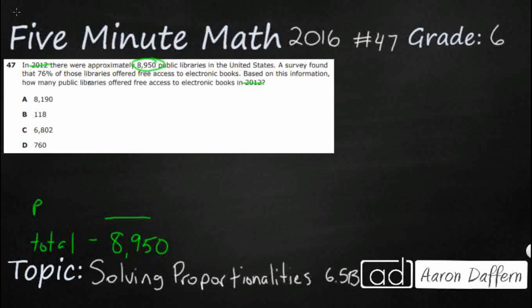So, what we need is we are trying to figure out the part. How many out of 8,950 total libraries offered free access to electronic books? All we know is that it's 76%. Now, how do we use 76% to figure out the part of 8,950? Well, we need to do a few things here.